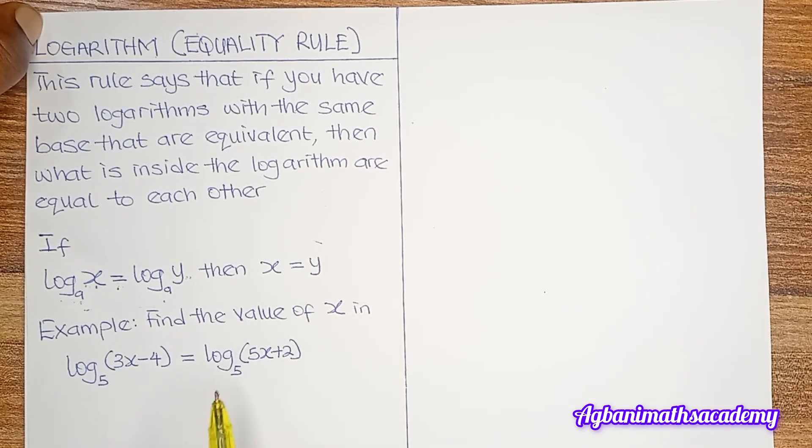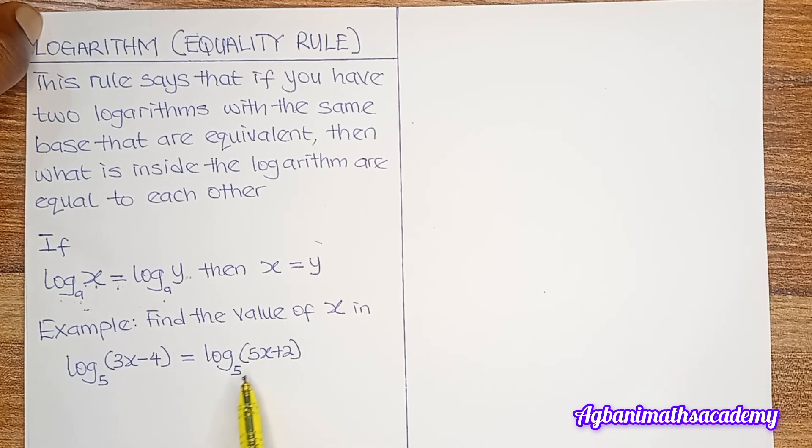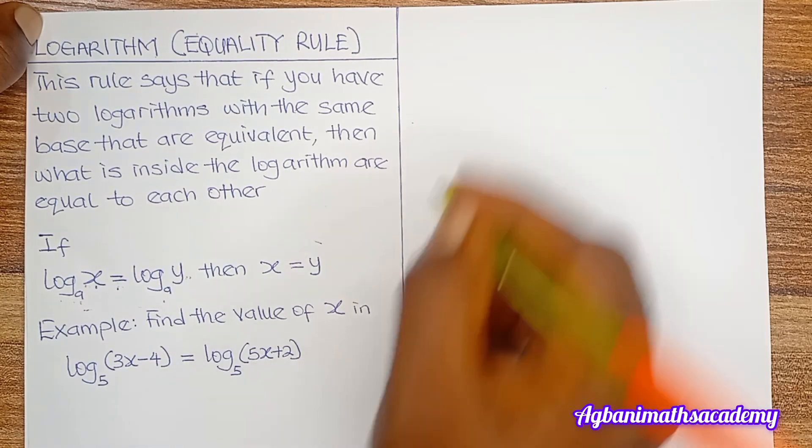It's a very simple rule. So with that understanding we can solve this example here. We're told to find the value of x in log (3x minus 4) base 5 is equal to log (5x plus 2) base 5. So let's solve together.